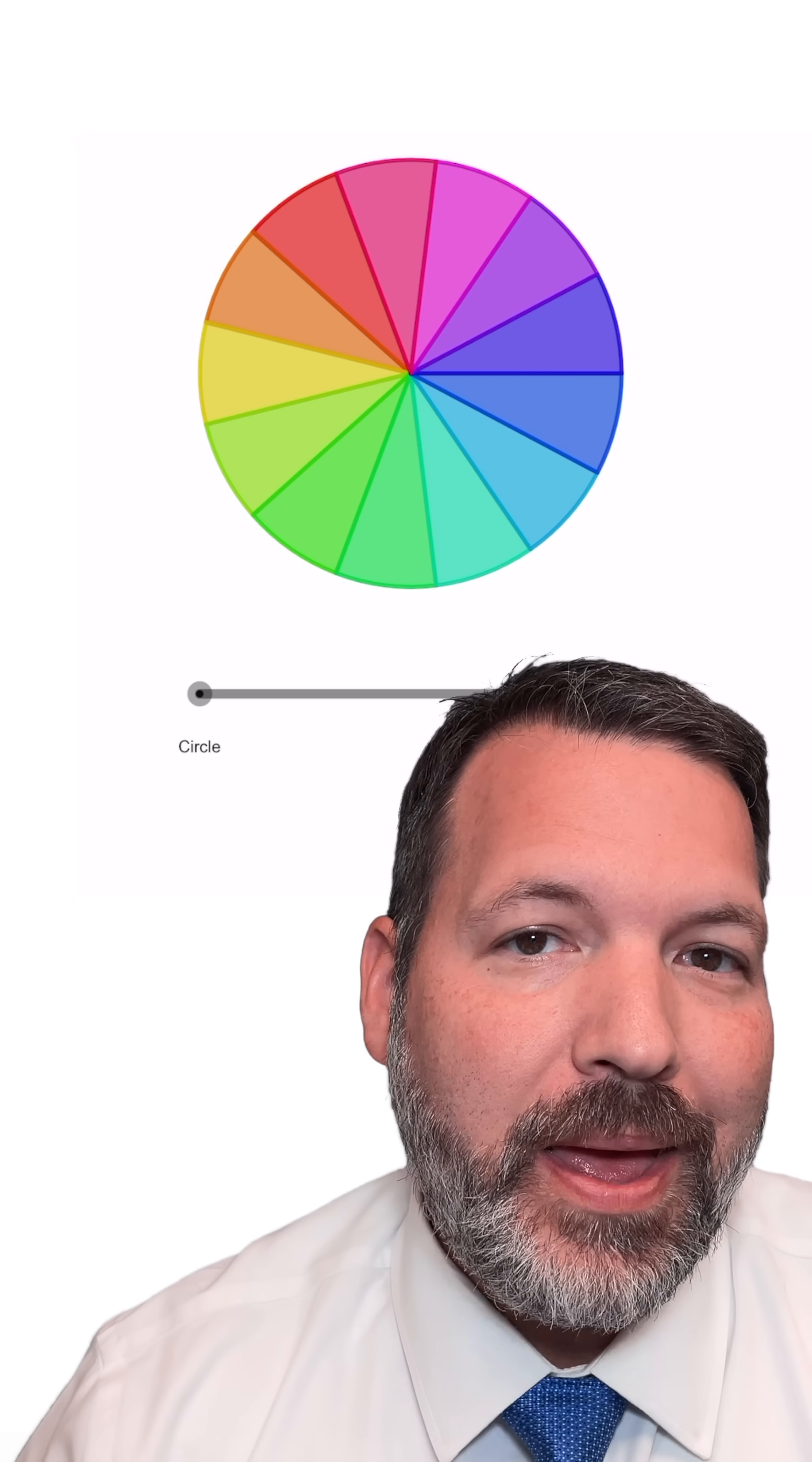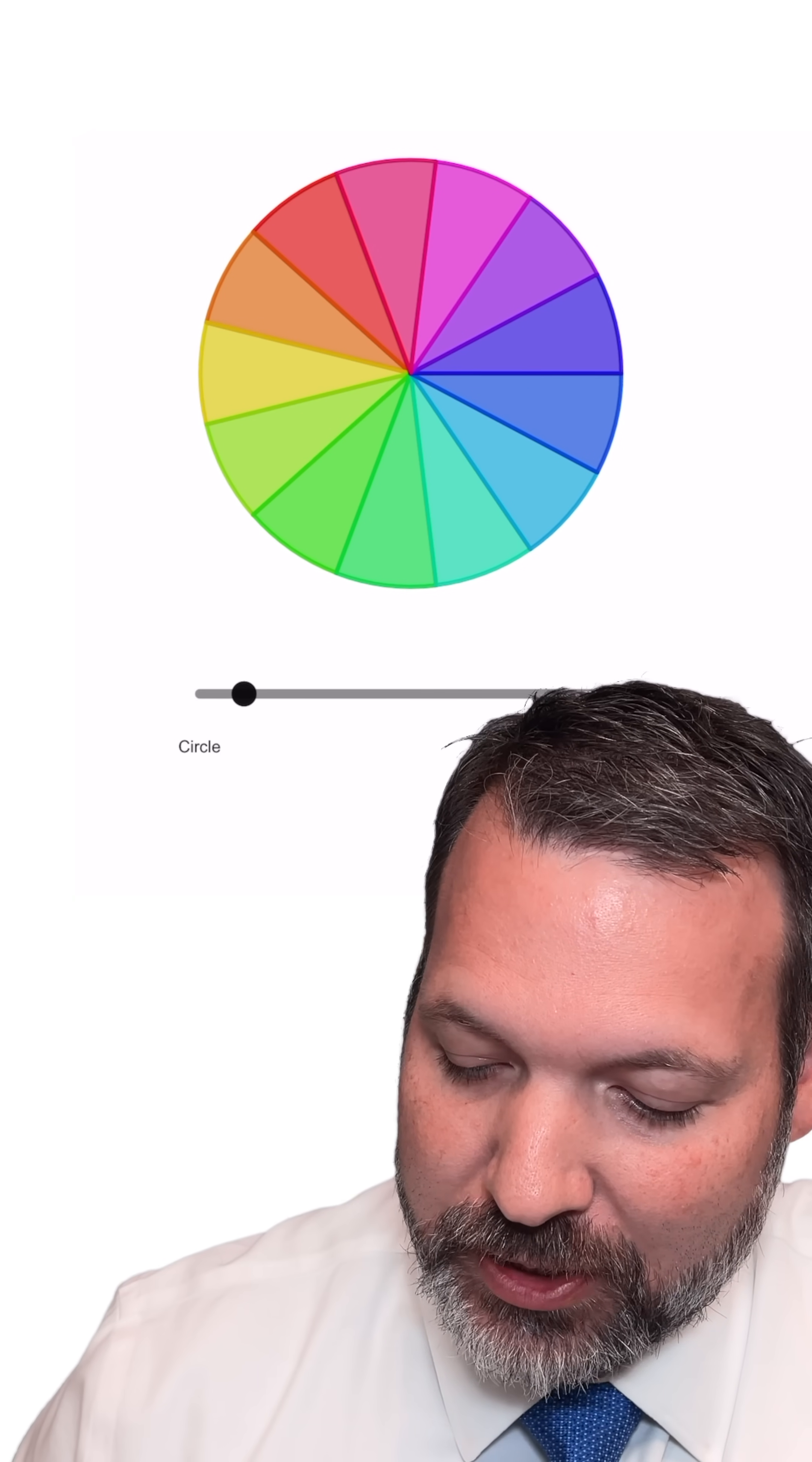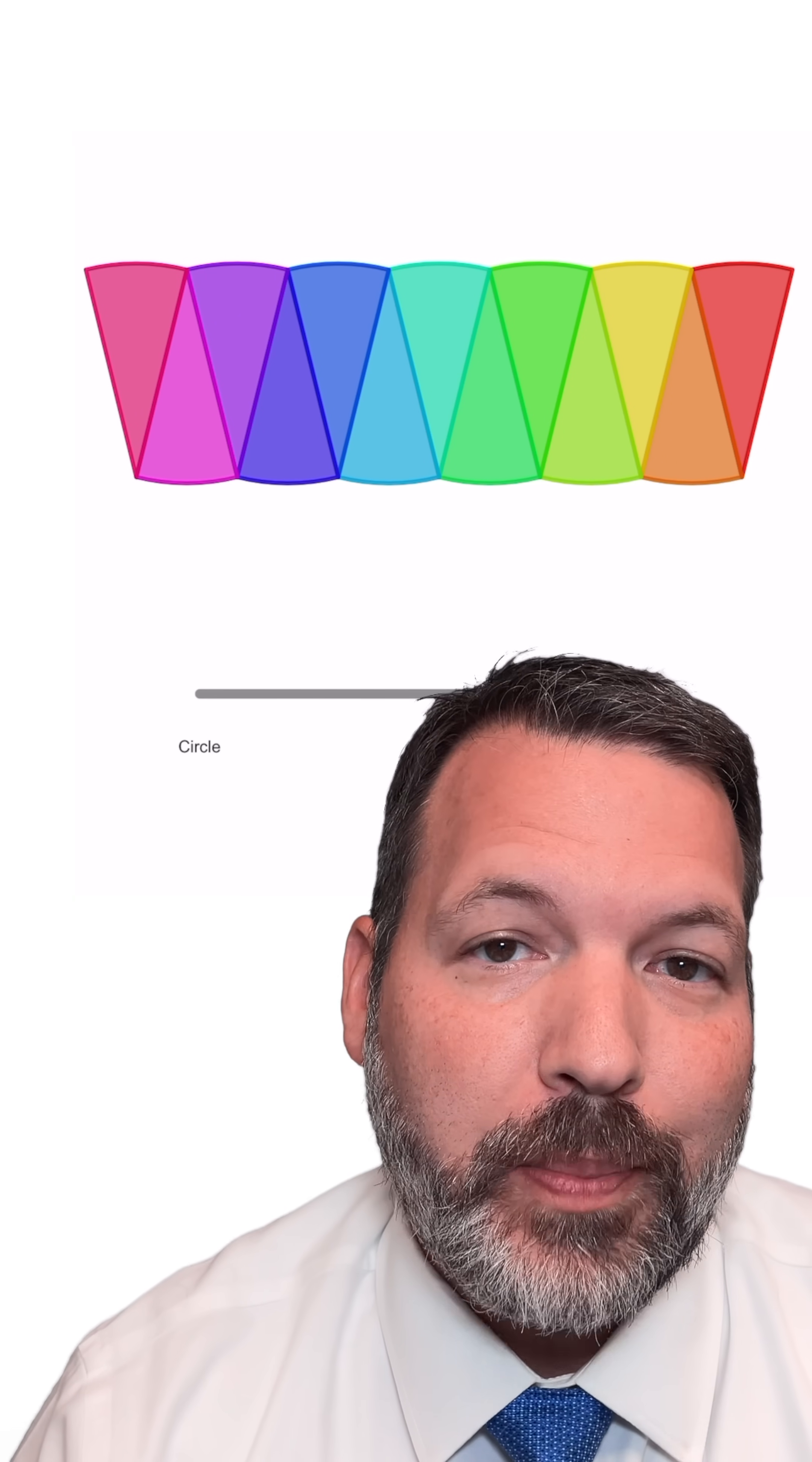Imagine splitting our circle up into many tiny triangular wedges. We are going to rearrange those wedges in a clever way. That is, we're going to try and make them look as much like a rectangle as possible.